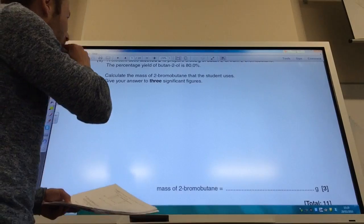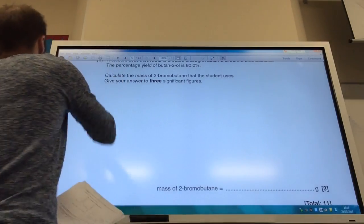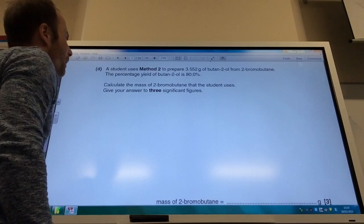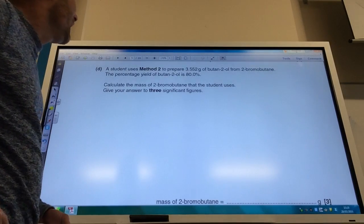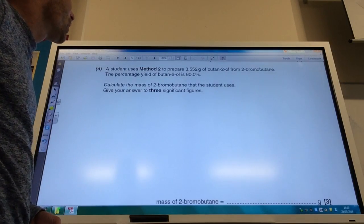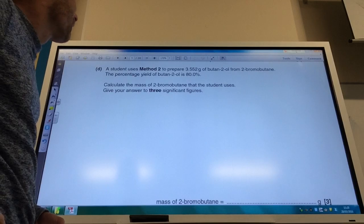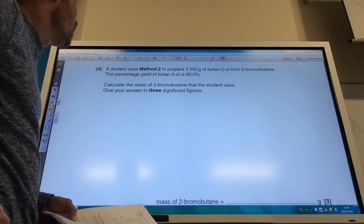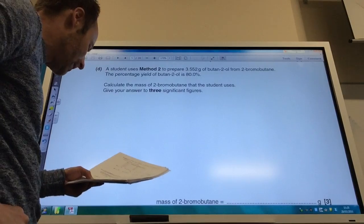Okay, so we've now got a percentage yield question. If we have a look, we're going to use method two to prepare 3.552 grams of butan-2-ol from 2-bromobutane. And it's only an 80% percentage yield. How much 2-bromobutane should we start with?